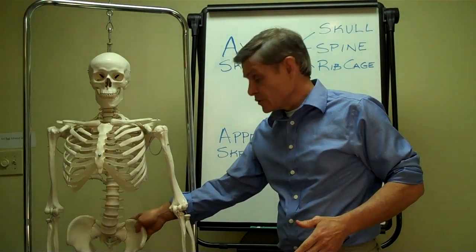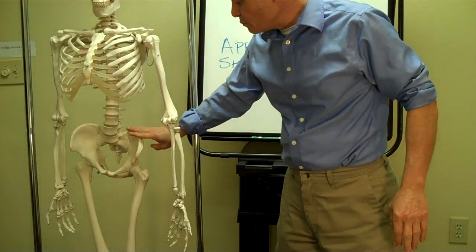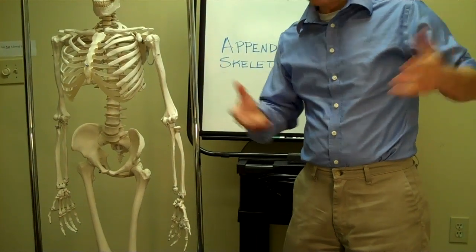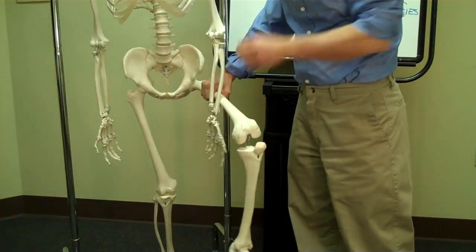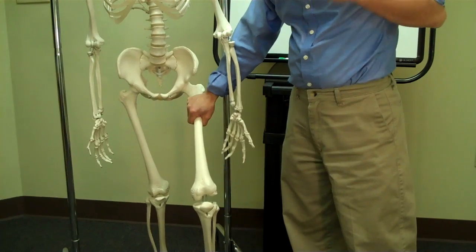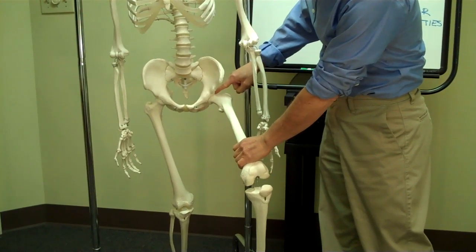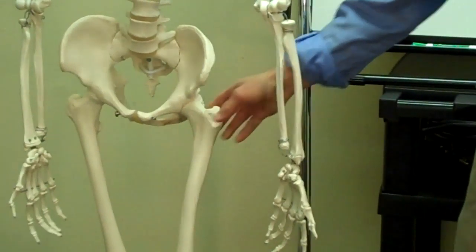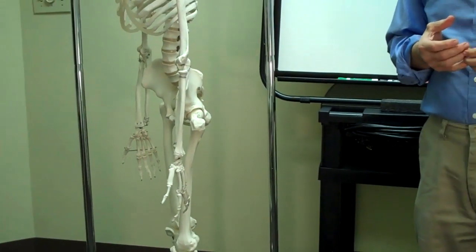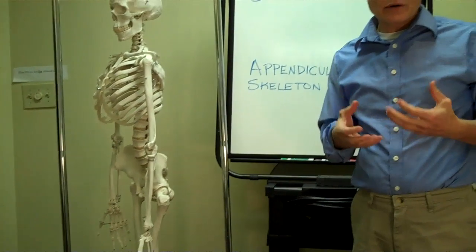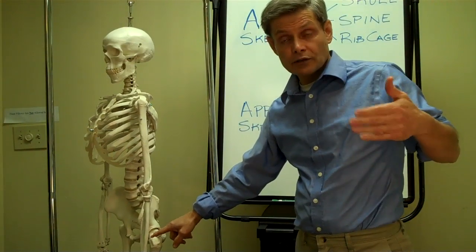The lower extremity starts with the hip bones, which you can feel on yourself. When you put your hands on your hips, you're putting your hands on the tops of the hip bones. The hip bones are connected to the thigh bone, called the femur — the biggest and strongest bone in the body. The hip joint is the very top of the femur, which fits into a cup on the hip bone. This is where people often get a fractured hip; older individuals sometimes get osteoporosis, which leads to a fracture of the neck of the femur.